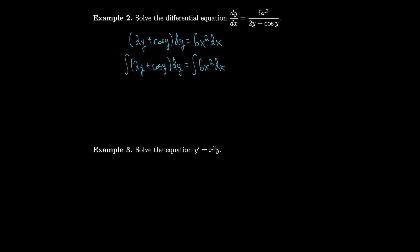Integrating 2y gives y squared; integrating cos y gives sine y. We group the constants on one side and get y squared plus sine y equals 2x cubed plus c. In this case we have y squared and sine y instead of y by itself, so this is an implicit solution for the differential equation. In fact, it's actually impossible to solve this one explicitly, so we just leave it like that.